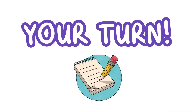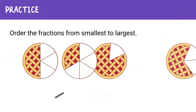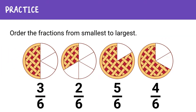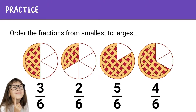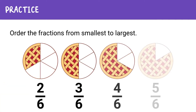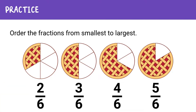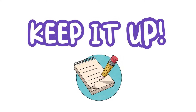Now let's practice. Here are 4 pies, each with a fraction of slices shaded: 3 sixths, 2 sixths, 5 sixths, and 4 sixths. Can you order them from smallest to largest? Let's check your answer. The correct order is 2 sixths, 3 sixths, 4 sixths, and 5 sixths. Keep it up!